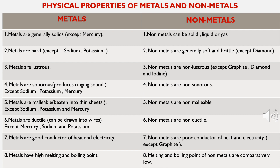Metals and non-metals can be classified on the basis of their physical and chemical properties. The first physical property is that metals are generally solids, except mercury. Mercury, which you learned about in standard 7th in thermometers, is the only metal which is liquid at room temperature.